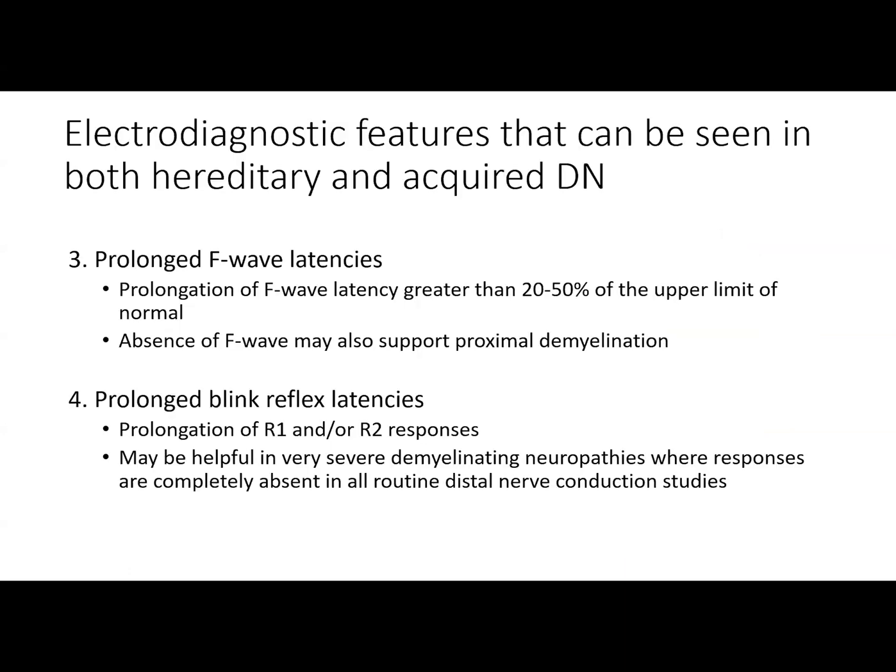Third, you can see prolonged F-wave latencies. Prolongation of F-wave latency greater than 20 to 50% of the upper limit of normal, or absence of F-waves that are typically present, may also support proximal demyelination. Fourth would be prolonged blink reflex latencies. A prolongation of R1 and/or R2 responses can be seen in demyelinating neuropathies. Blink reflexes can be very helpful in severe demyelinating neuropathies where responses are completely absent in all other routine distal nerve conduction studies.